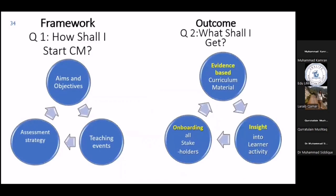A question may arise: how shall I start mapping the curriculum? On one part we have a framework, and on the other end we have an outcome. To answer question number one — your framework — you need to have aims, a list of teaching sessions, and a valid and reliable assessment strategy. If you have all these things, you can start working on your curriculum map.